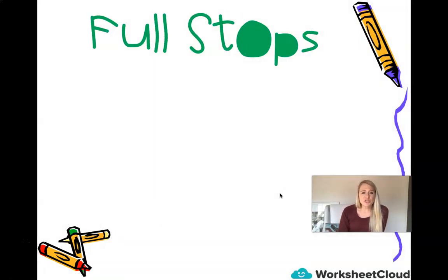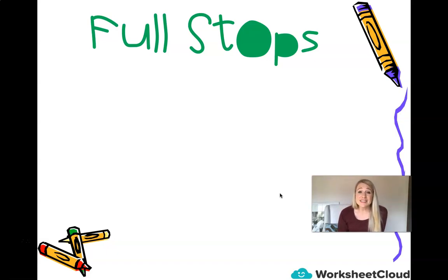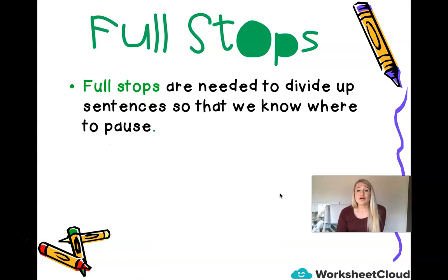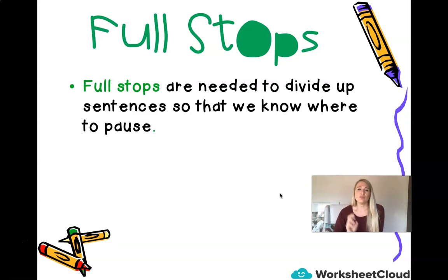Our next punctuation, which is also just as common as a capital letter, is a full stop. I guarantee you, as you're watching this, you are probably thinking to yourself: I don't always put full stops at the end of my sentences. And it is very easy to forget when you write a sentence or an answer to something. So I'm here to remind you of the importance of full stops. Full stops are needed to divide up sentences so that we know where to pause. Full stops allow us to have a bit of a breath when we read, and so they indicate: okay, it's time to pause, it's time to have a bit of a breath, and then we move on with the rest of our reading. Full stops are very important.